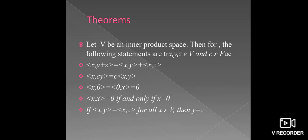Now see the statement of the theorem. Let V be an inner product space; then the following statements are true for X, Y, Z belonging to vector space V and scalar C belonging to field F. First: the ordered pair (X, Y+Z) equals the ordered pair (X, Y) plus the ordered pair (X, Z). Second: the ordered pair (X, cY) equals the conjugate of c times the ordered pair (X, Y). Third: the ordered pair (X, 0) equals 0, and the ordered pair (X, X) equals 0 if and only if X equals 0.